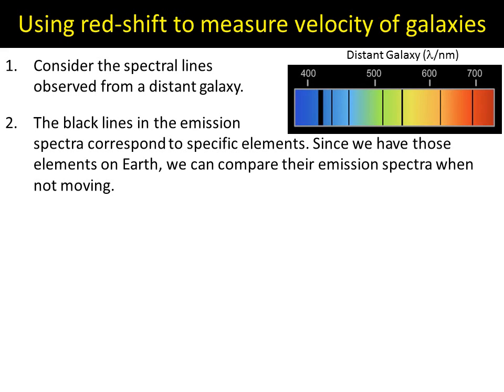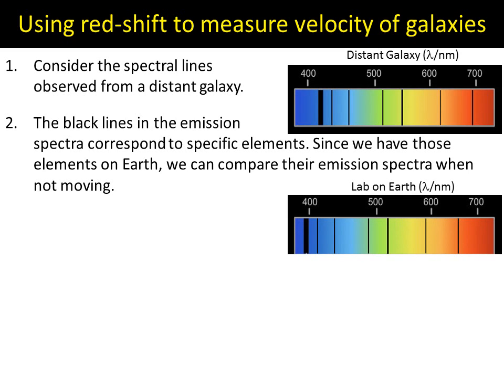We can take those elements and do experiments on Earth to compare their emission spectra when stationary with their emission spectra from the galaxy. If we take the same chemicals and do it on Earth, what we find is this.